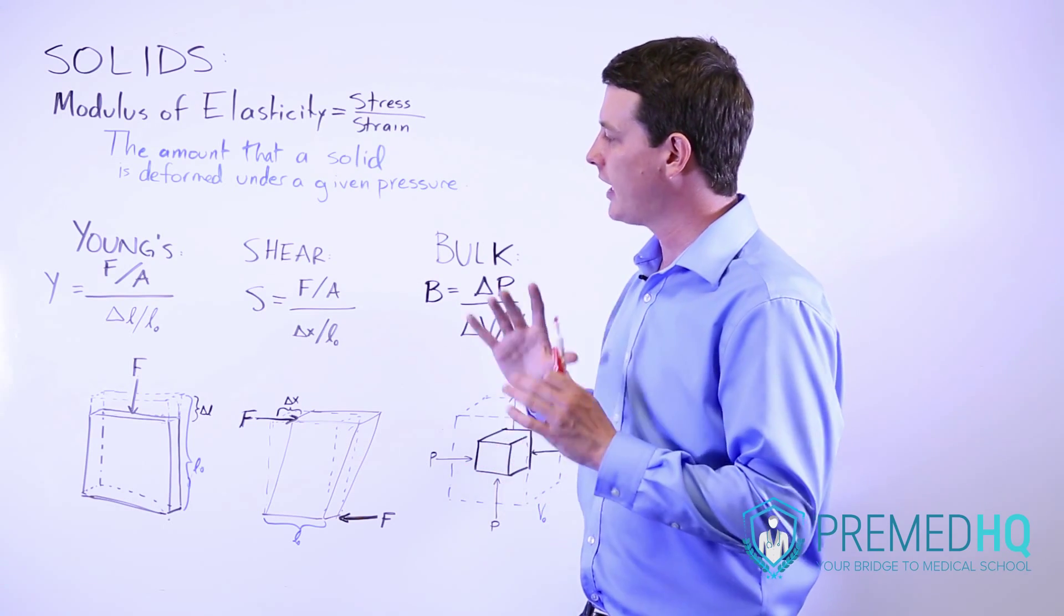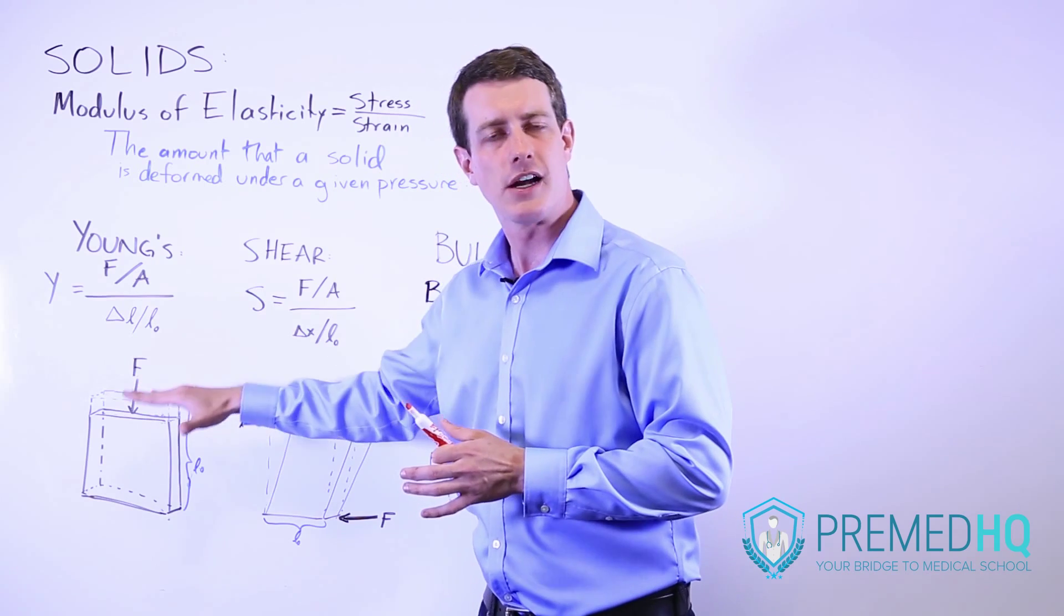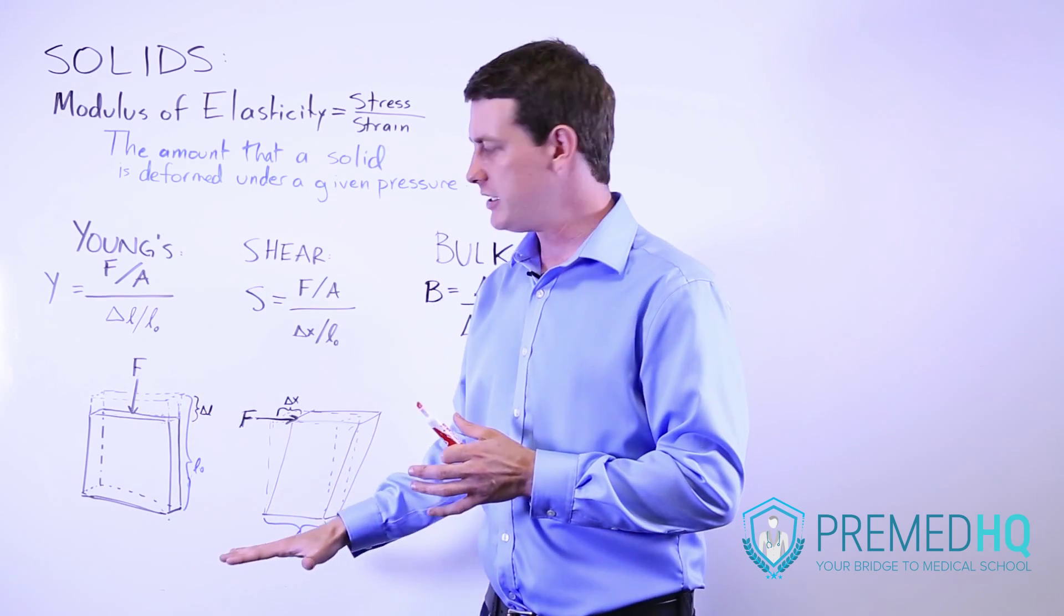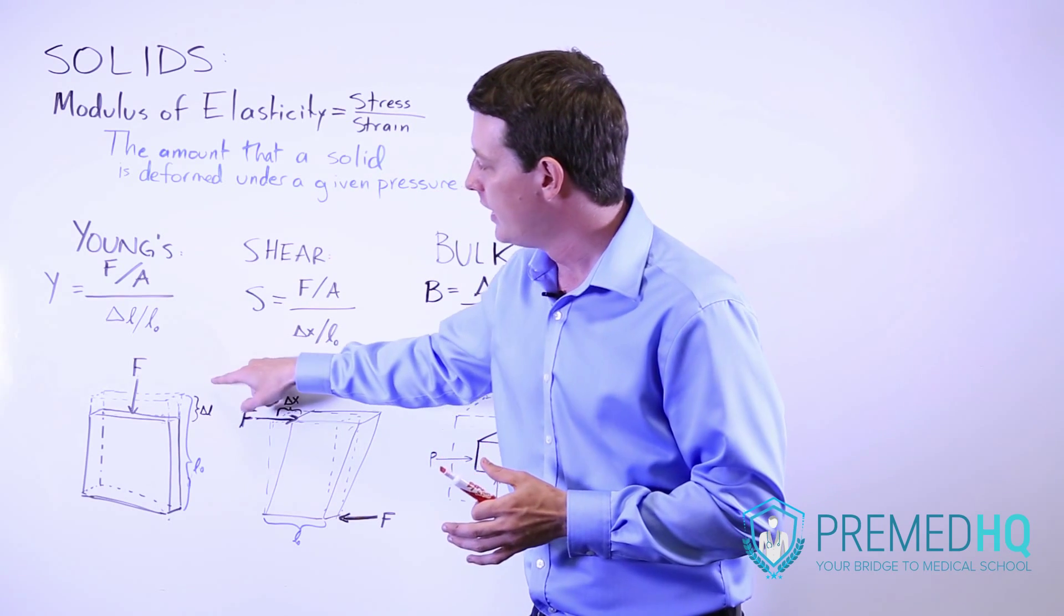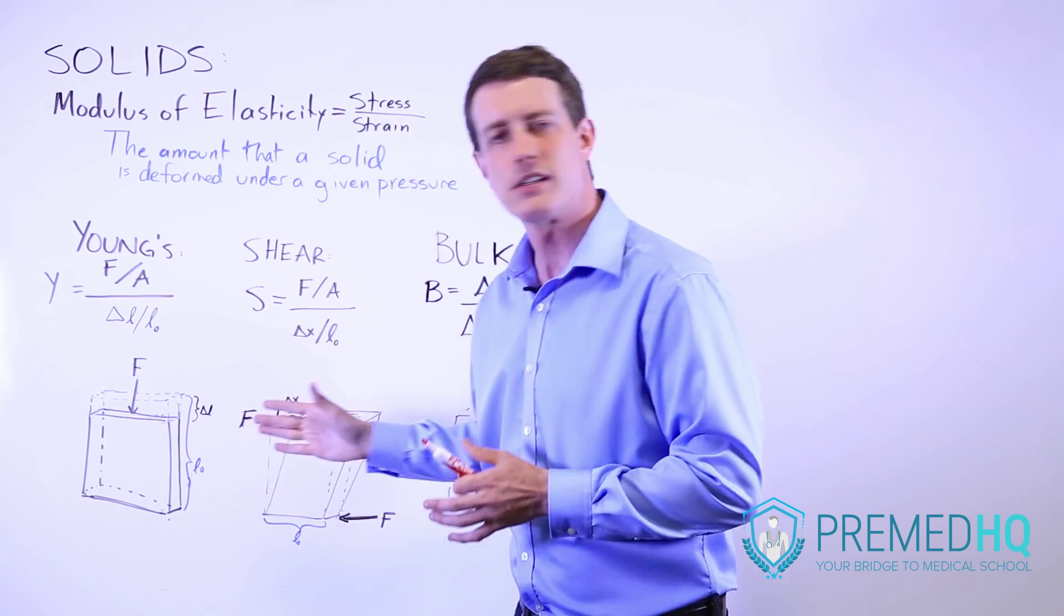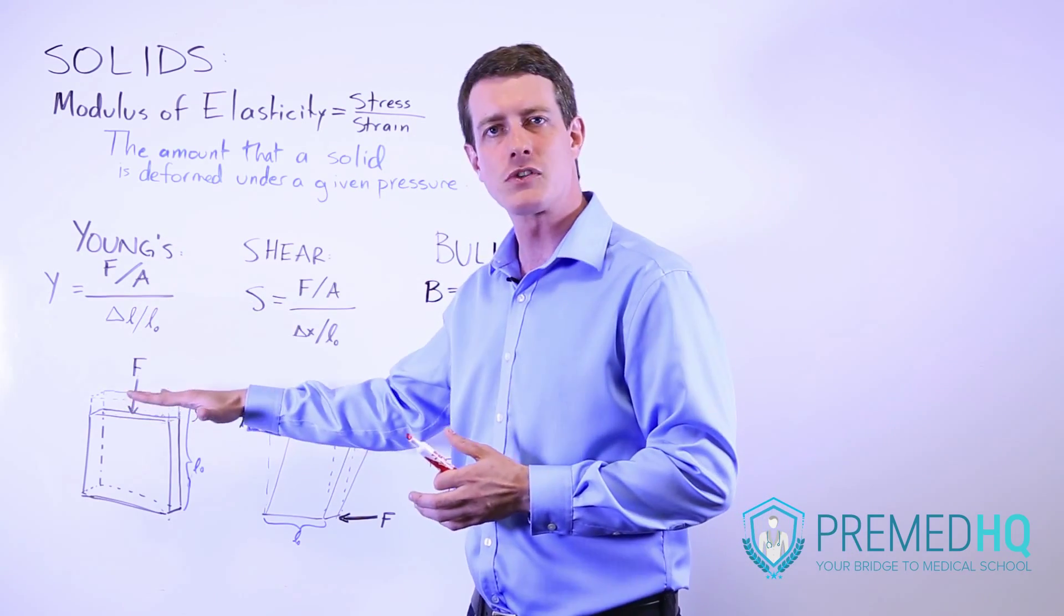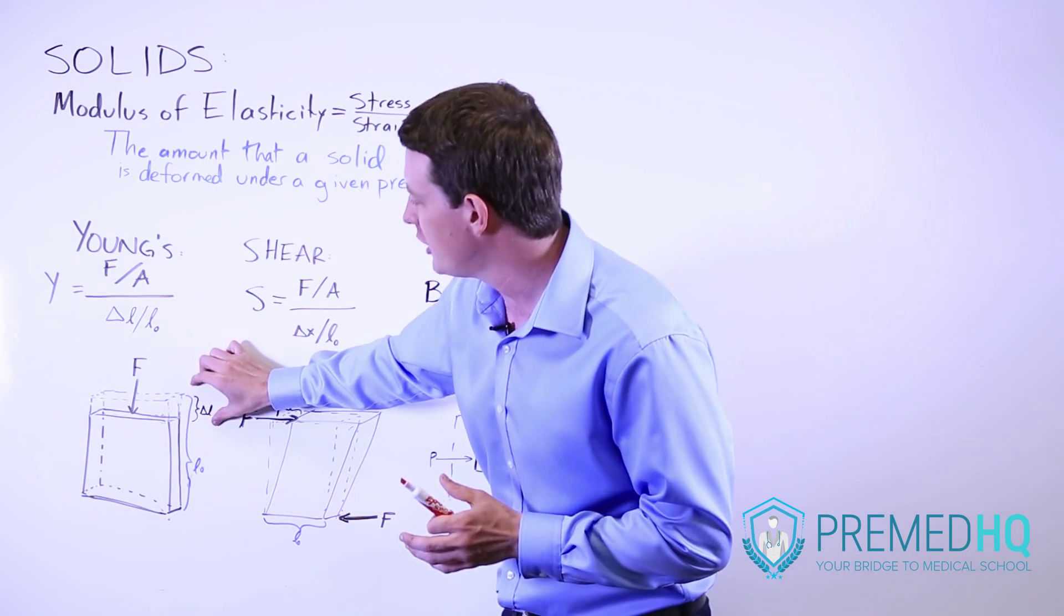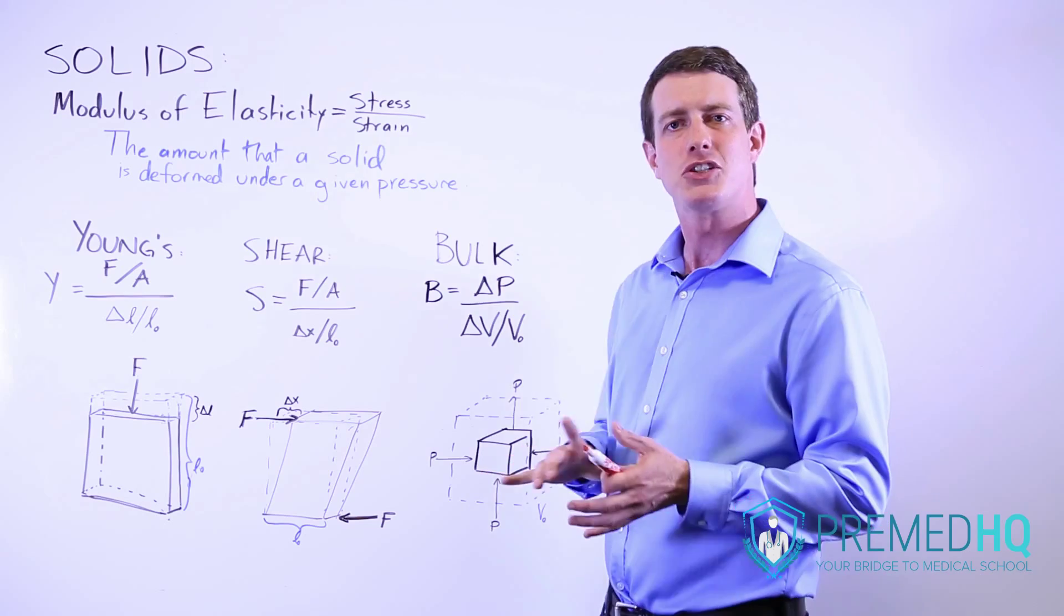So to calculate the Young's modulus you look at the force over the surface area that the force is being applied to and then you're going to examine the strain by looking at how much its length changes relative to its initial length. So this is a common thread that you'll see a lot. You'll be applying some sort of stress and you're looking at how much it changes in one dimension relative to its initial value in that dimension.